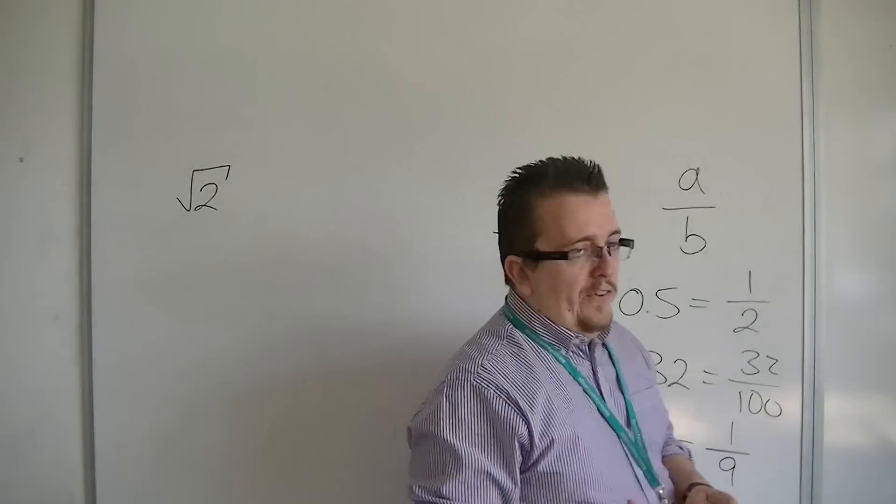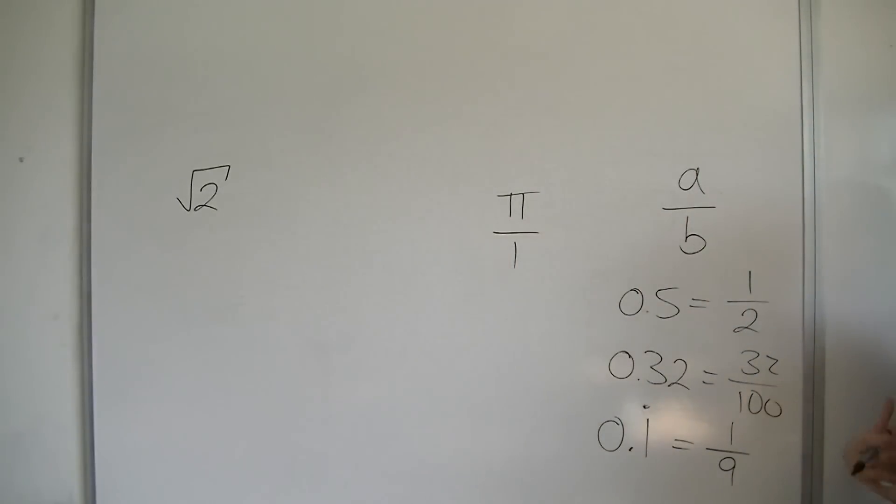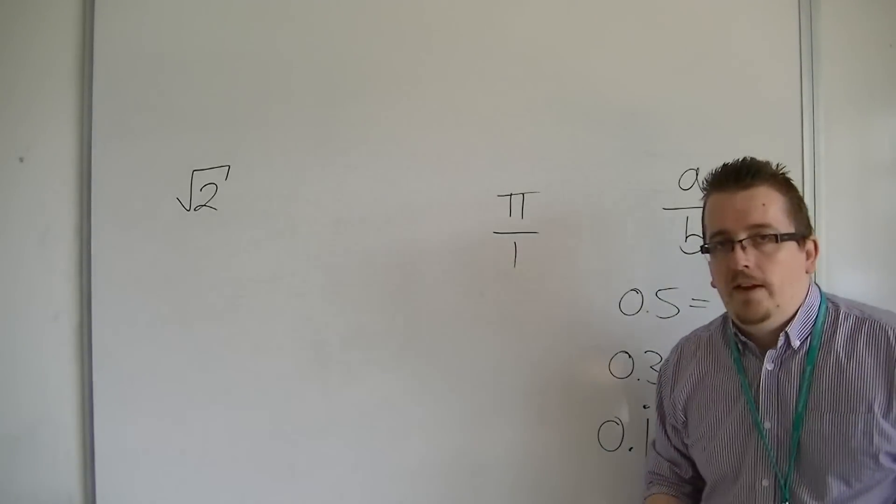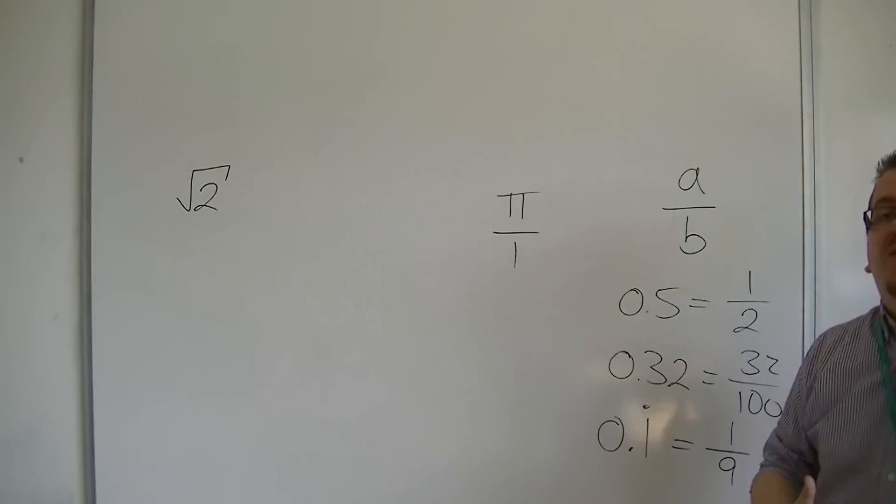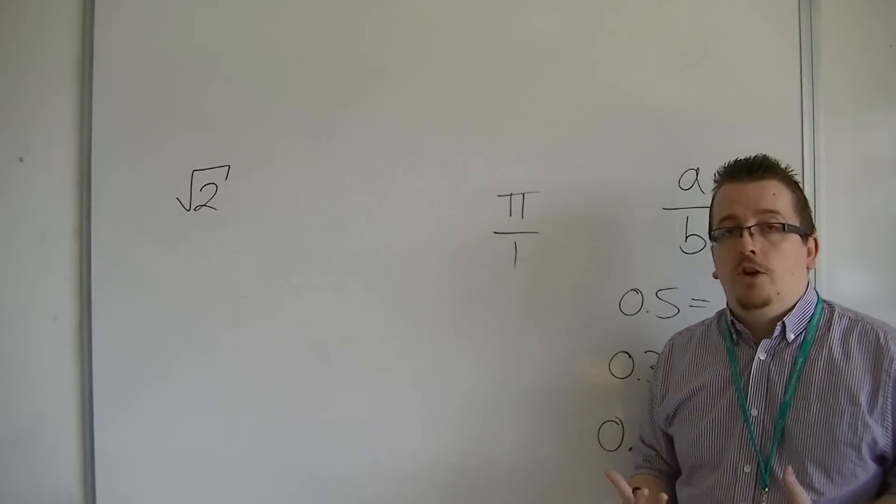So a surd is an unsimplified radical. That's kind of the complicated way of saying it. So root 2 cannot be simplified, and root 2 is another example of an irrational number.